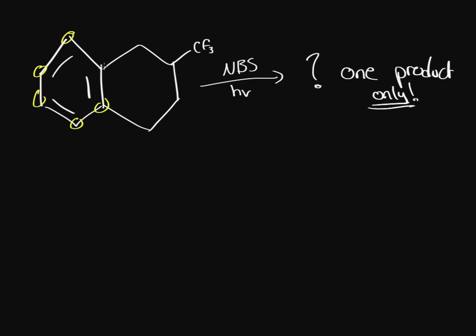However, these carbons are extremely unstable because having a radical on a benzene is extremely unstable. Then we have a secondary over here, we have a tertiary over there, and then we have a secondary and secondary over here.